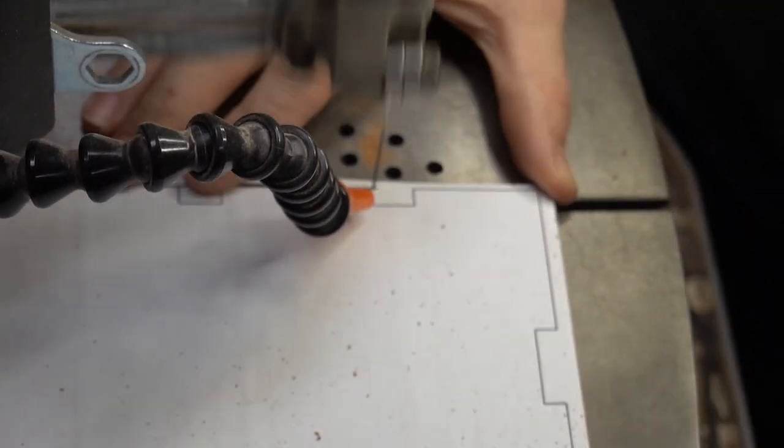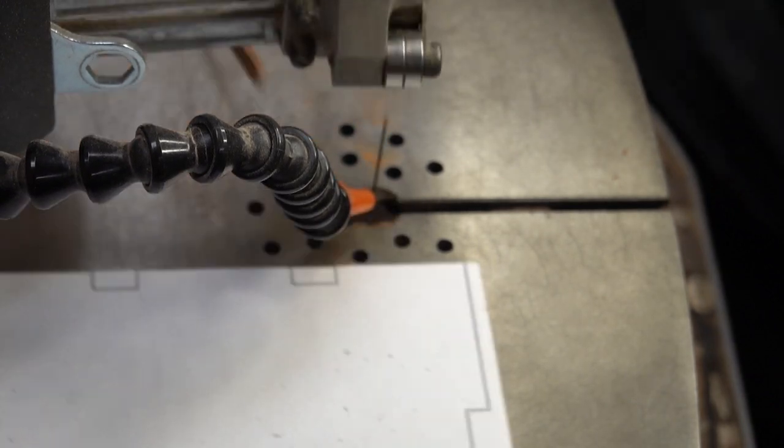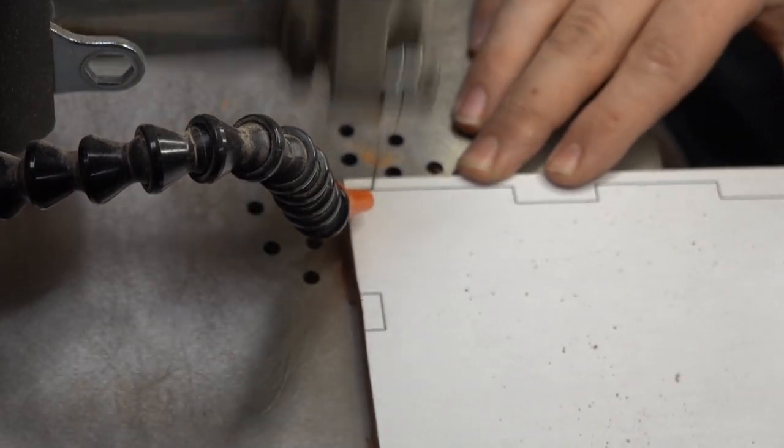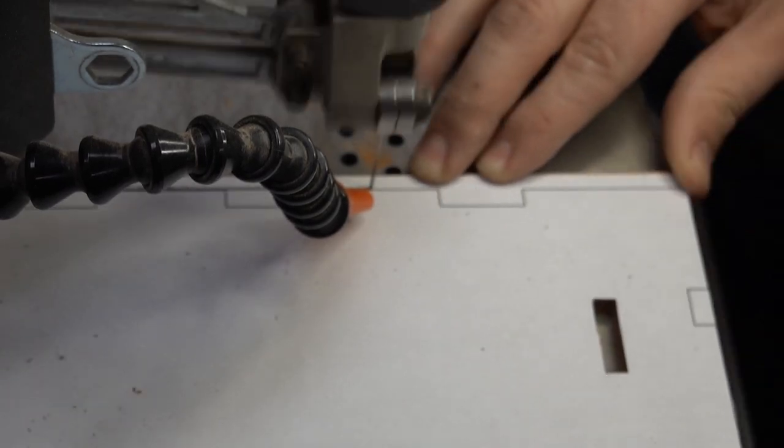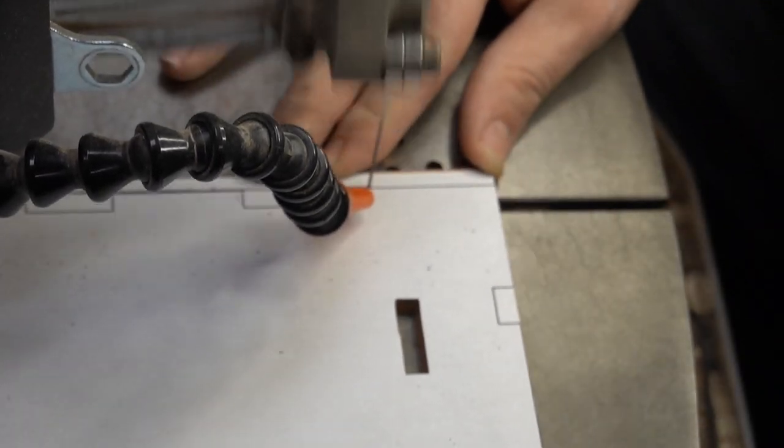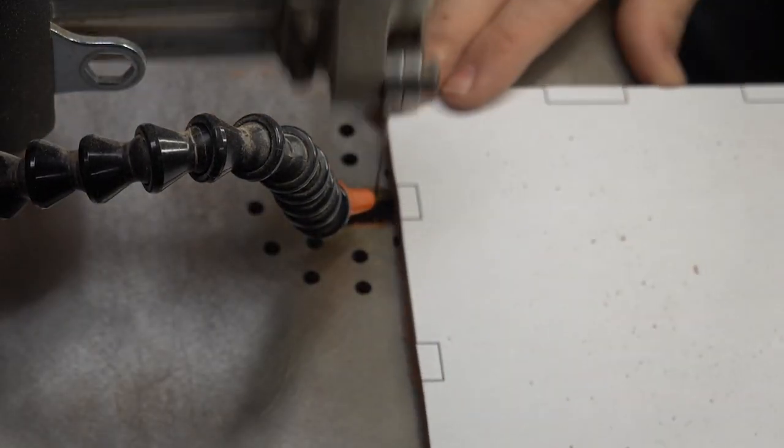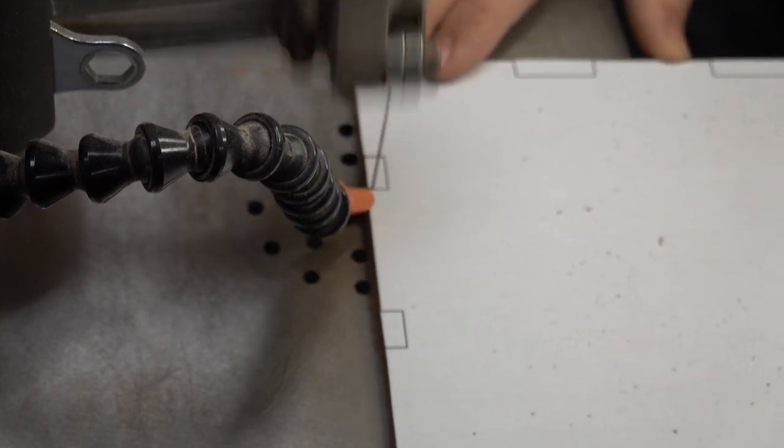Other people use contact paper and shelf liners, some people even use spray adhesive or glue sticks directly onto the pattern to affix it directly to the wood. This is the way that I do it, and the way that I was shown, and it's worked well for me for about three years, so I continue to do it.